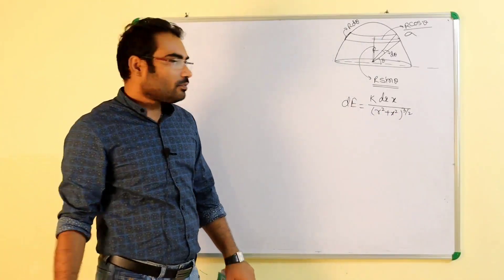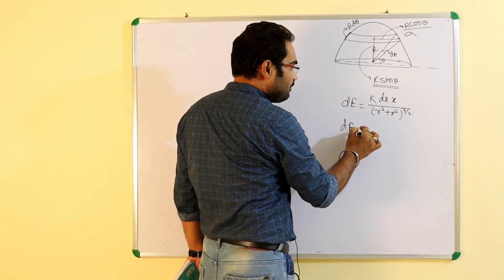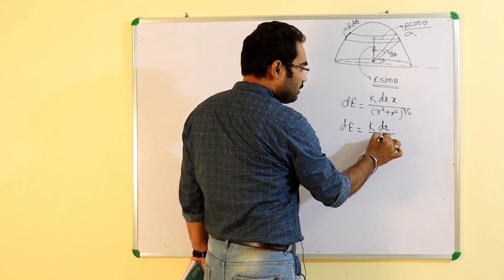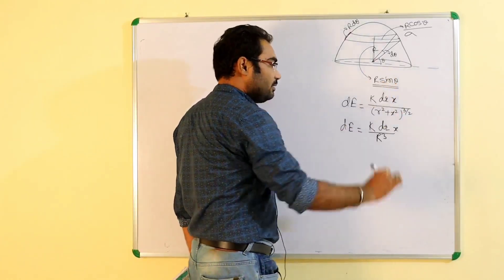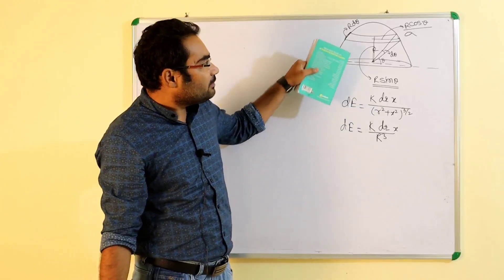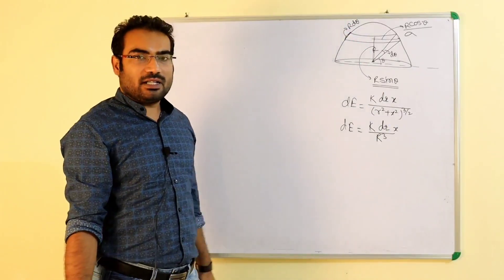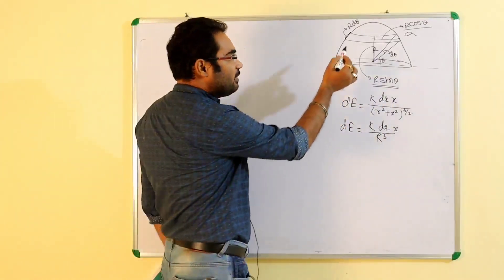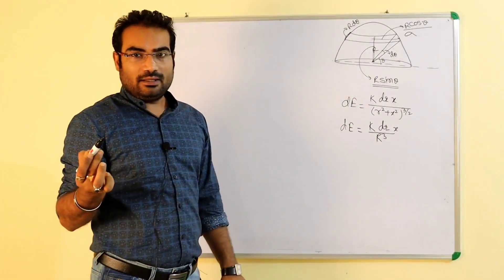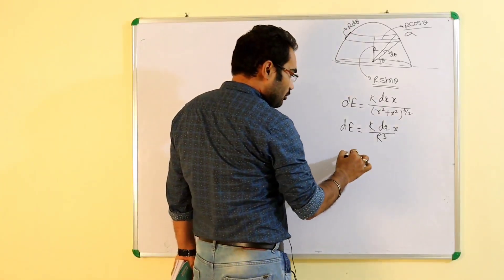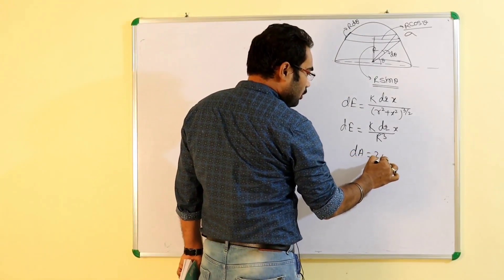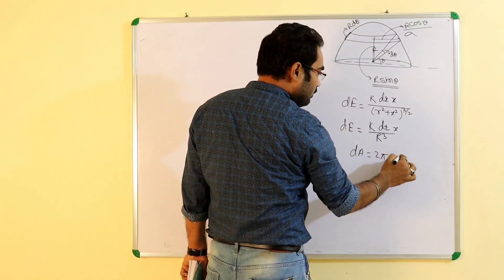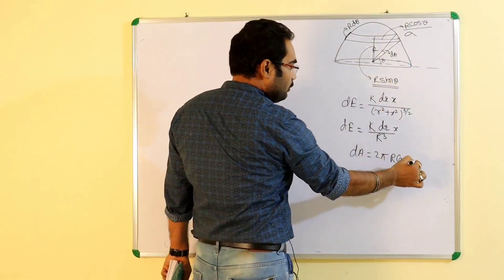R² cos²θ + R² sin²θ — R² common ho jayega, sin²θ + cos²θ = 1 ho jayega. To yeh wala jo term hai, yeh R³ ho gaya. To dE ka jo value hai: K dq by R³ into x. X ka value R sin θ ke barabar hai. dq ka value kitna hoga? Yeh jo strip humne consider kiya, iska area: dA = 2π R cos θ into R dθ.